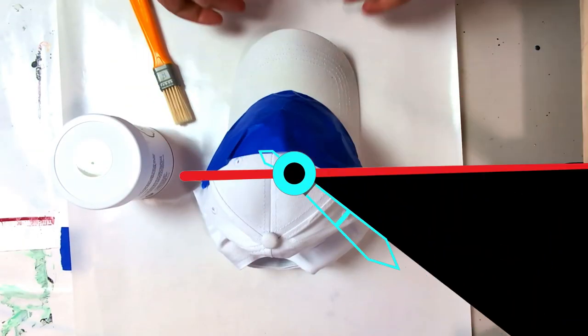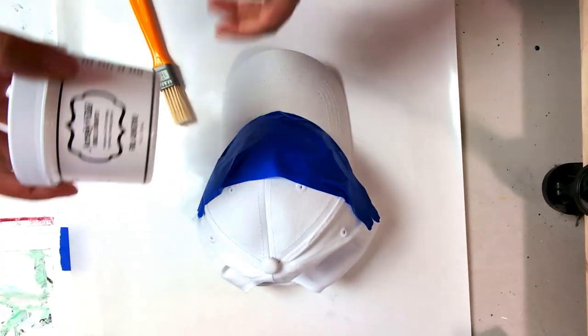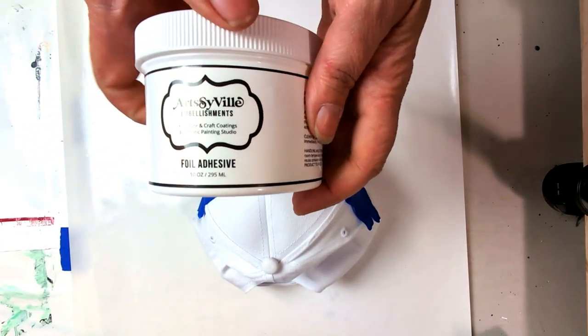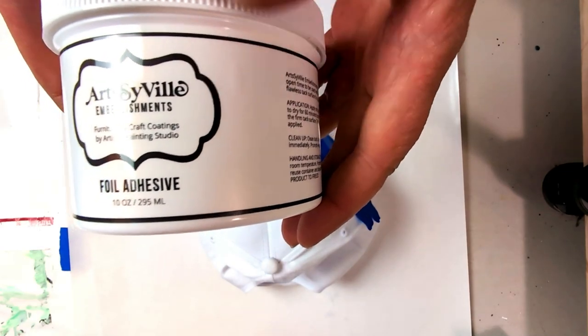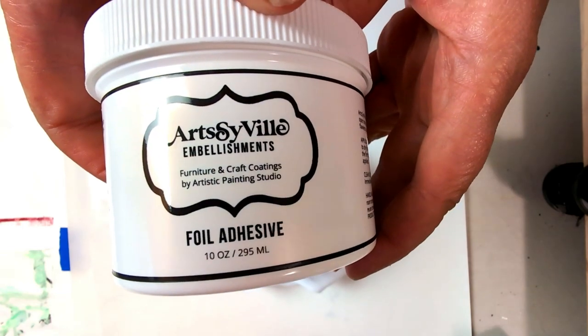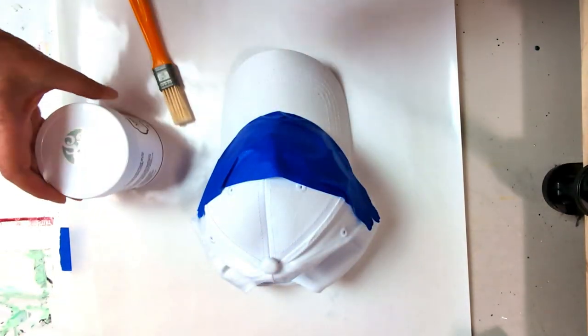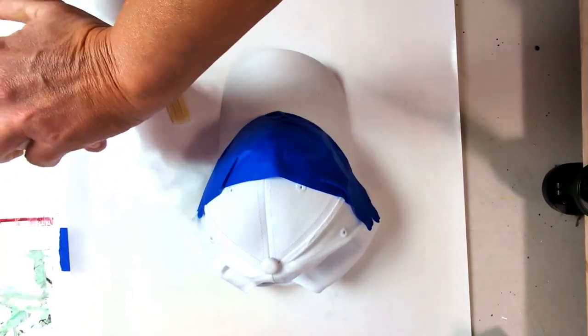Now we need to let that dry. Okay, so I'm back, and this is dry. So now we need to grab our Artsyville embellishment. This is also foil adhesive, so we are going to brush this on.